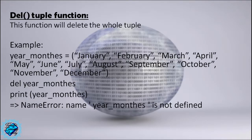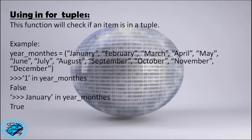Del function of tuple — del tuple function. This function will delete the whole tuple. Example: year_months equals January through December. Del year_months. Print year_months — we will get a NameError: name 'year_months' is not defined, as we deleted the whole tuple.